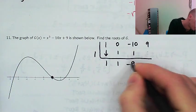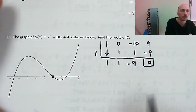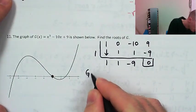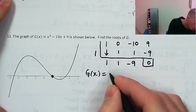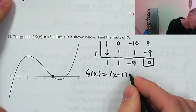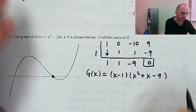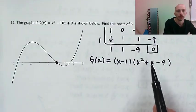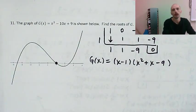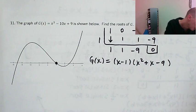Negative 10 plus 1 is negative 9, and that checks out. So I know that g of x can be factored with x minus 1, and what I'm left with is x squared plus x minus 9. If we can think of two numbers that multiply to negative 9 and add to 1 — like 3 and 3, or 9 and 1 — neither of those adds up correctly, so we're going to use the quadratic formula on this piece.